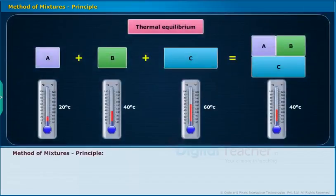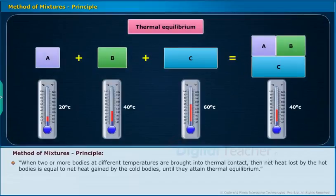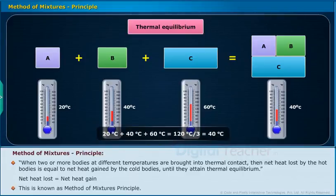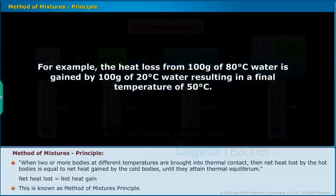Method of Mixtures Principle: When two or more bodies at different temperatures are brought into thermal contact, the net heat lost by the hot bodies is equal to the net heat gained by the cold bodies until they attain thermal equilibrium. Net heat lost = Net heat gained. For example, the heat loss from 100 grams of 80°C water is gained by 100 grams of 20°C water, resulting in a final temperature of 50°C.